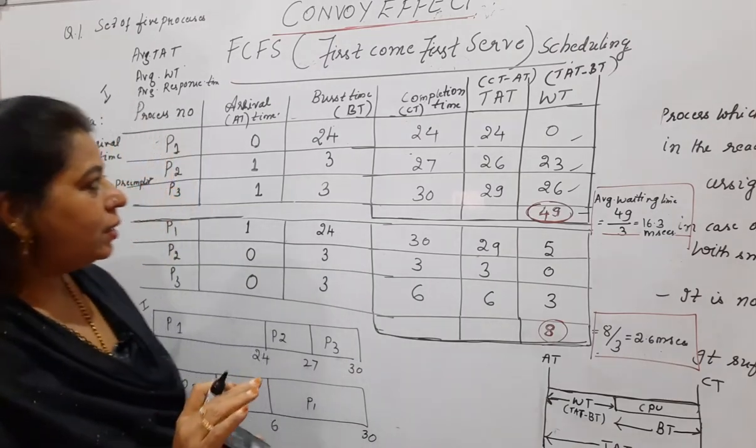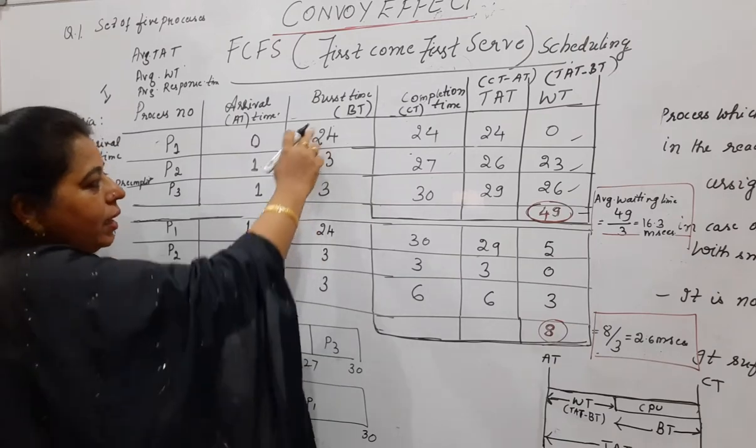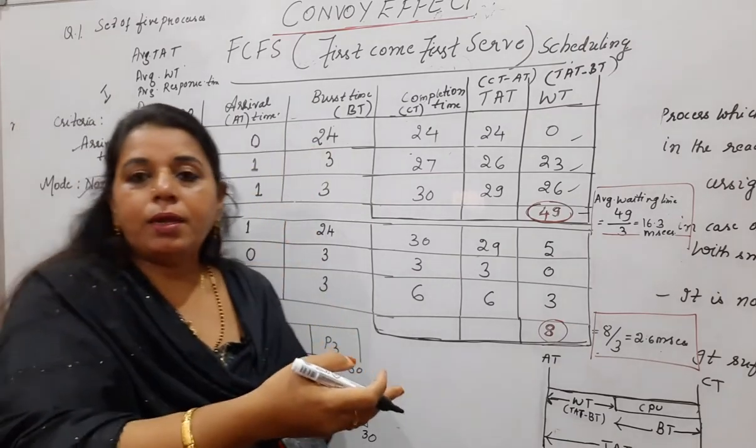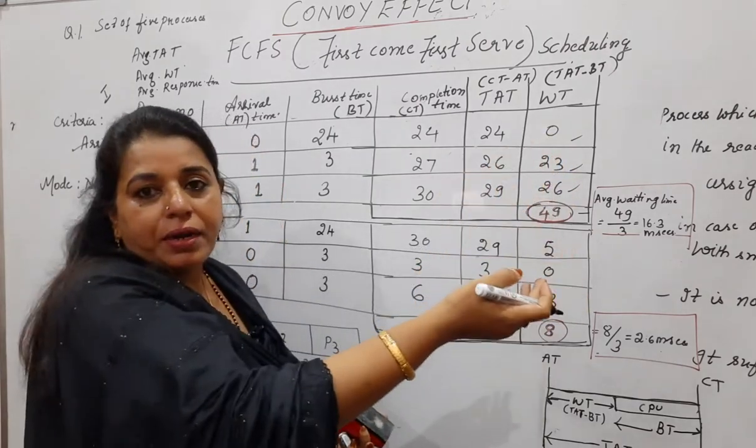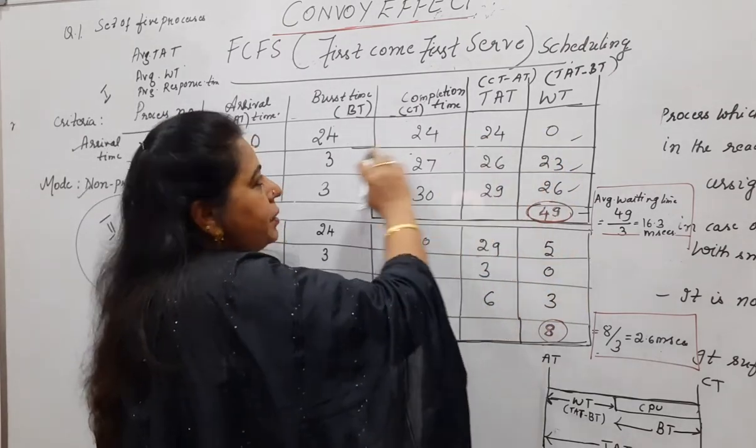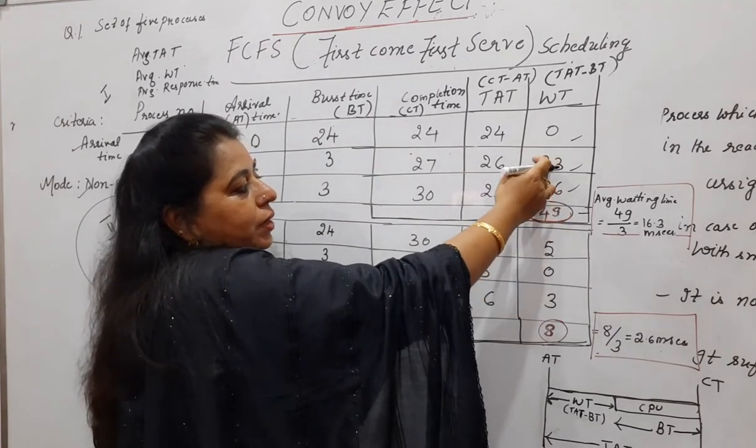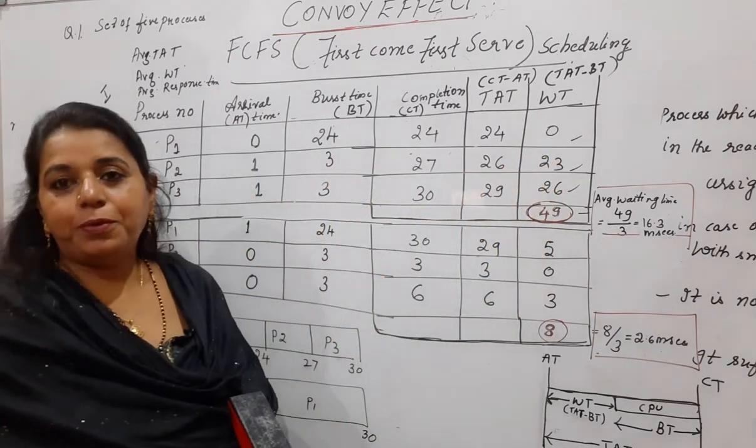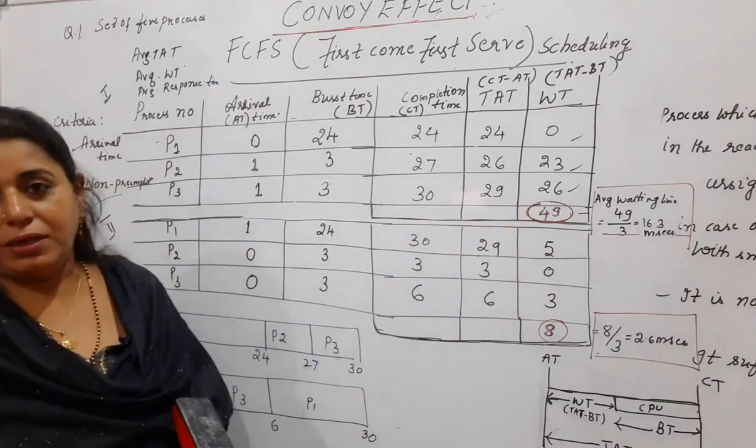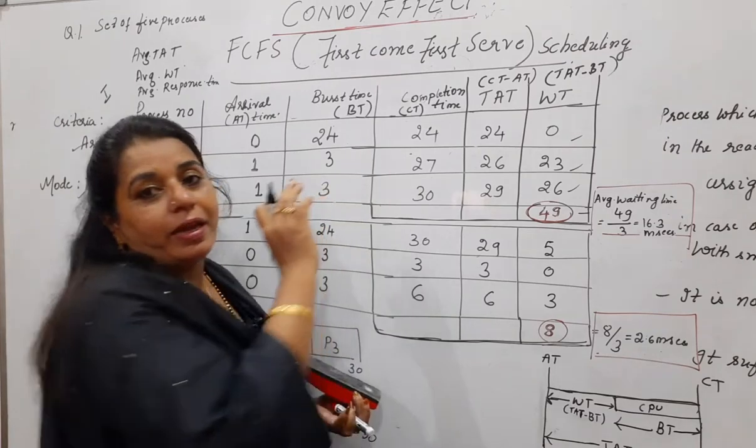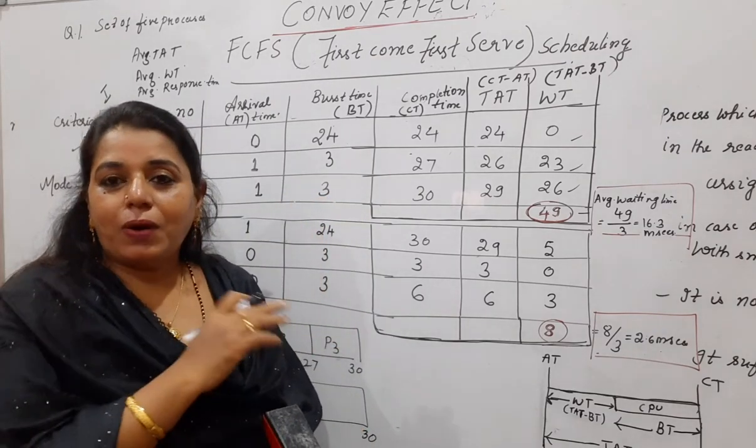We have observed here that the first situation has illustrated the convoy effect. Why? Because the processes with higher burst time, if they arrive first, then they are making the other processes wait for a long time. Look here, you can very clearly see process P1 has not waited at all. It got the CPU first, but its burst time was more. Whereas P2 and P3, just observe here, P2 has waited for 23 units. P3 has waited for 26 units. Though their burst time was very small, but still they have to wait. This is called convoy effect.